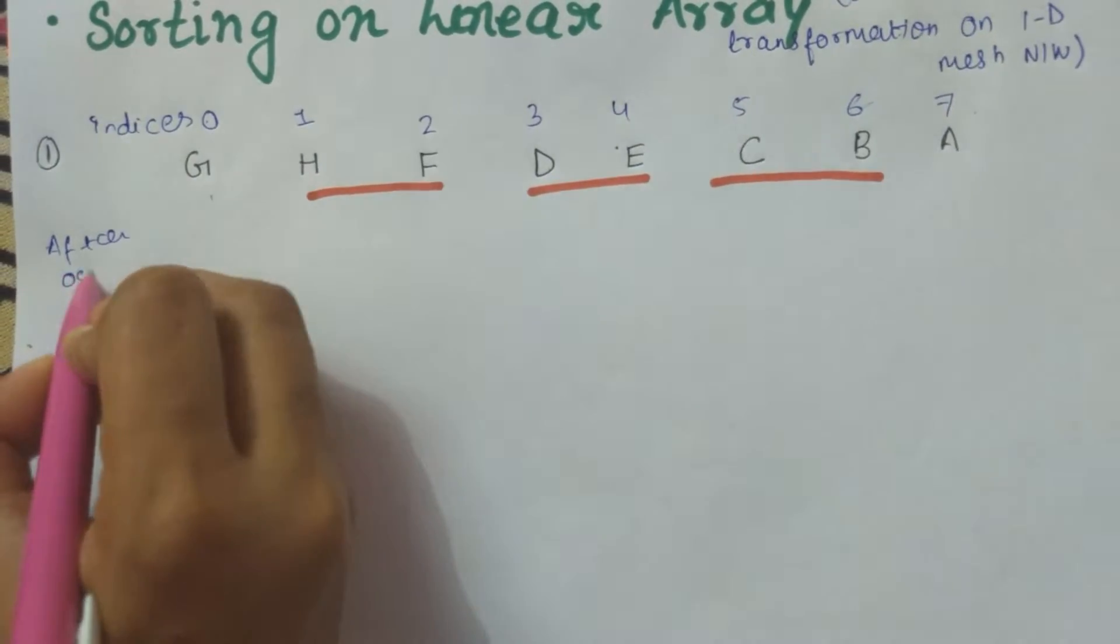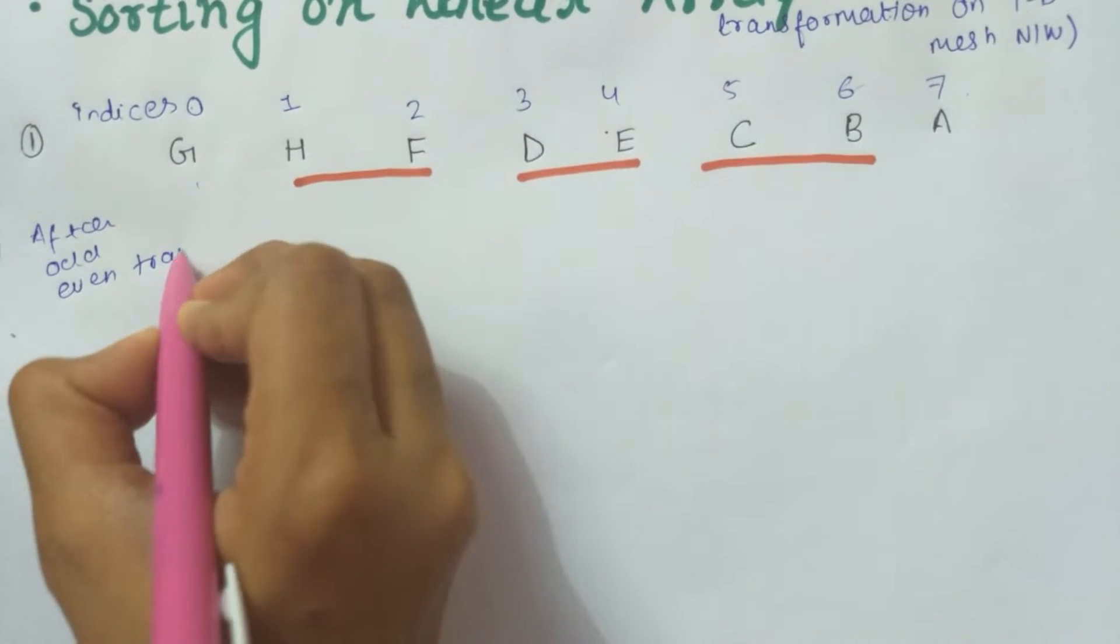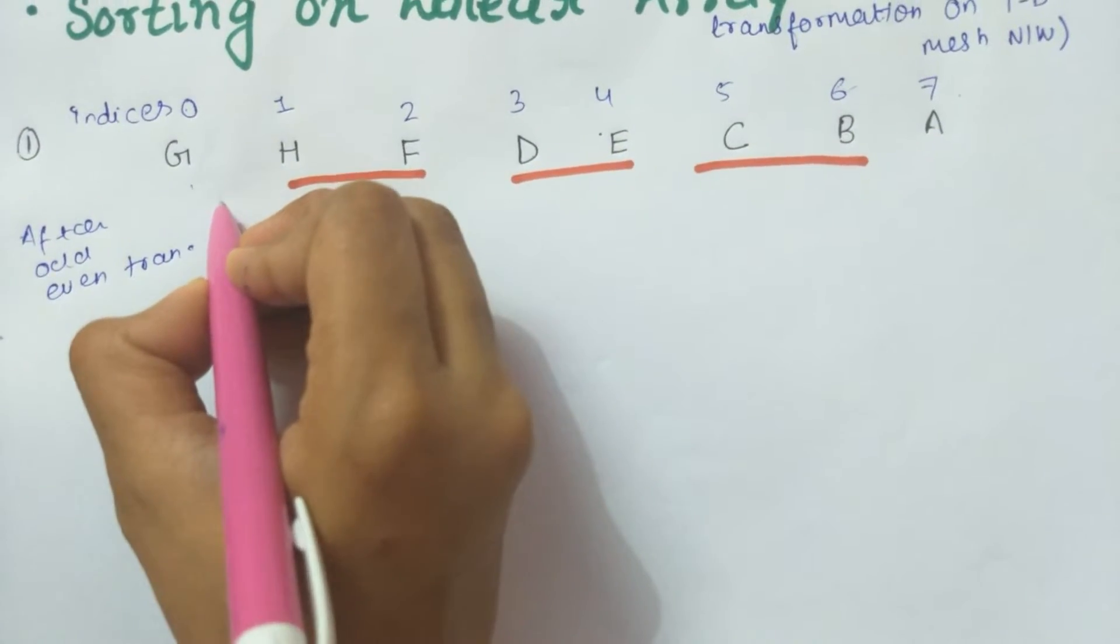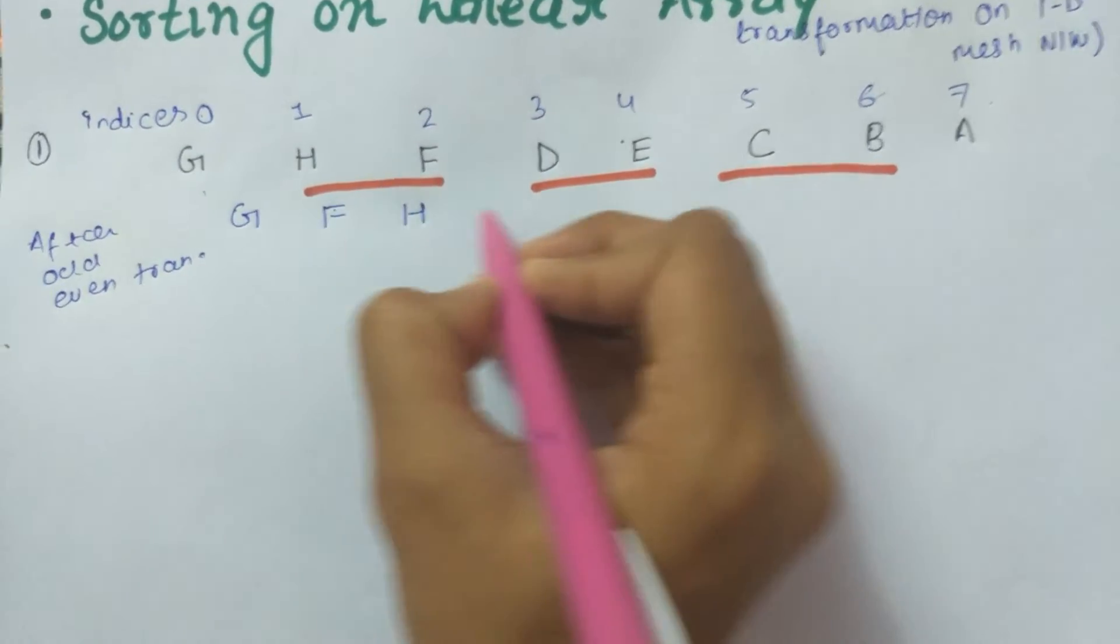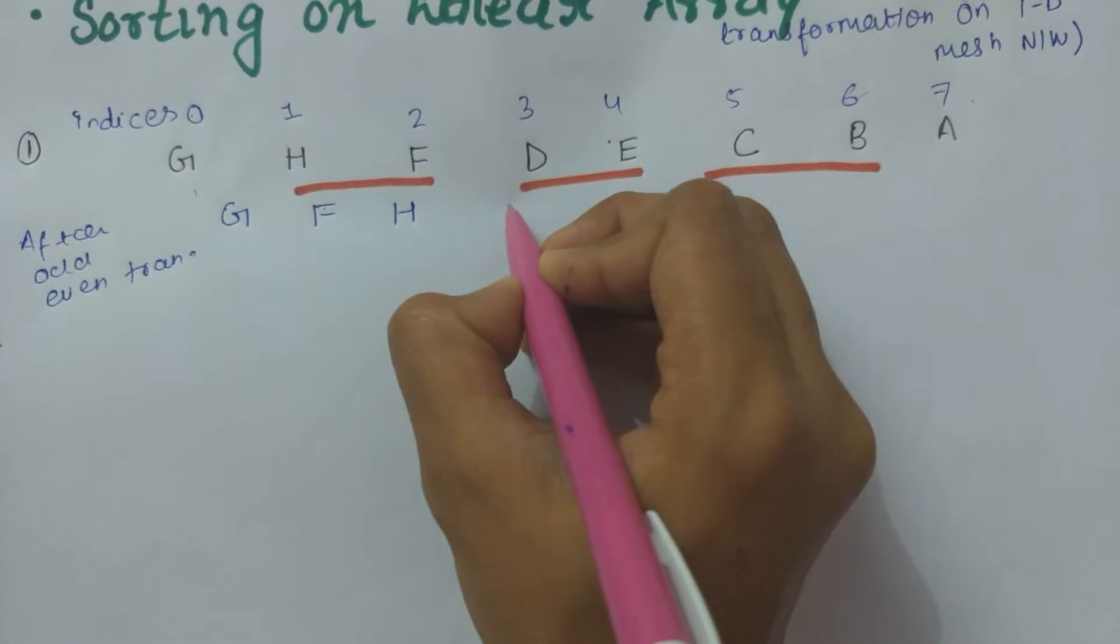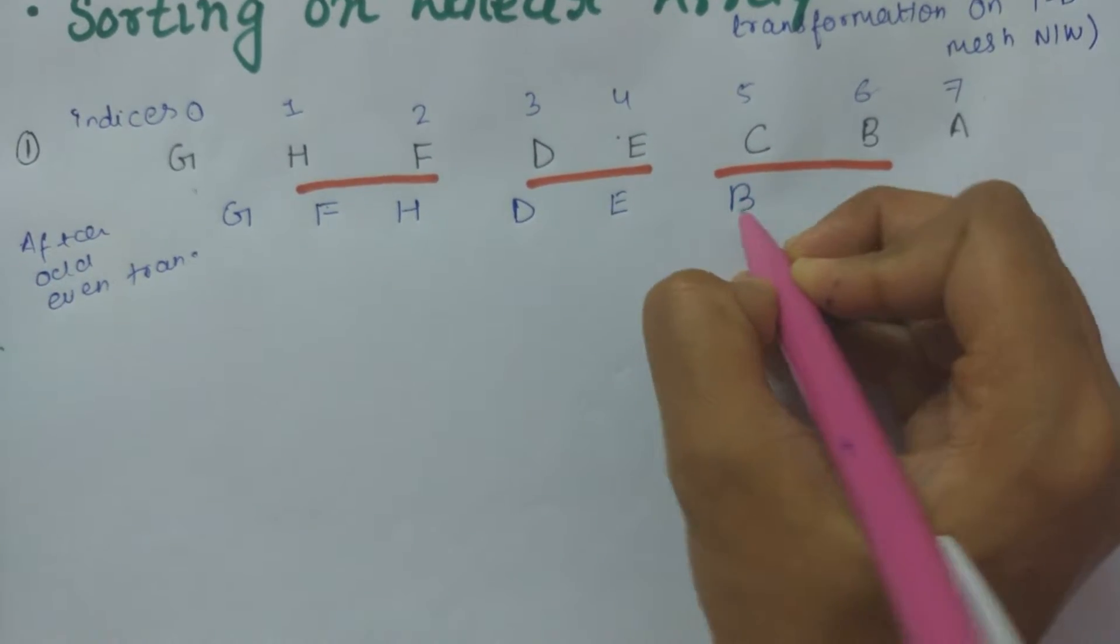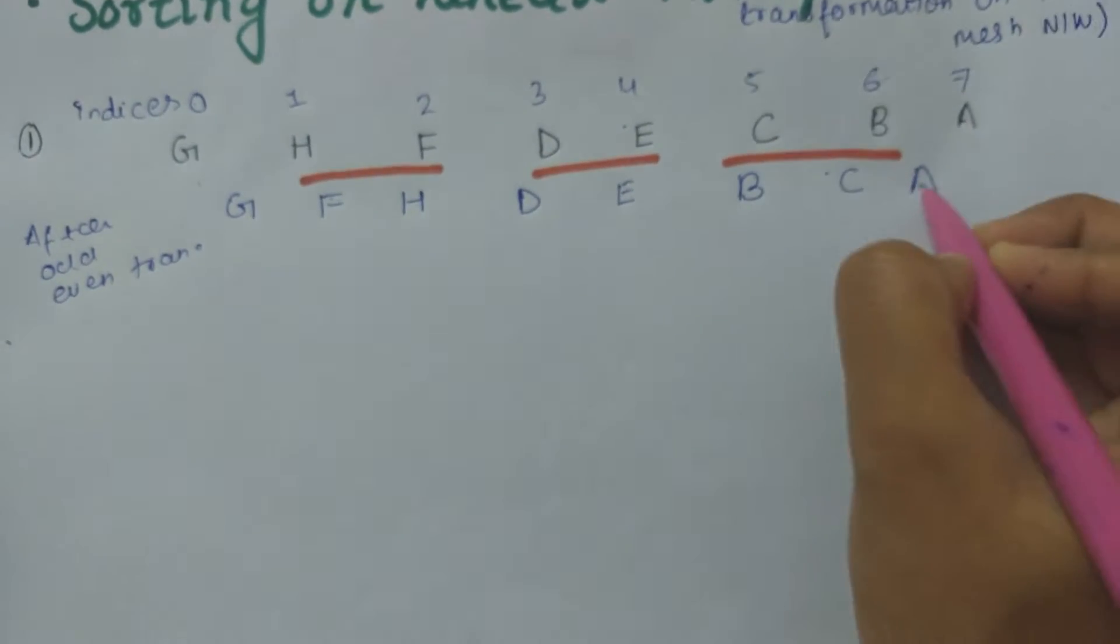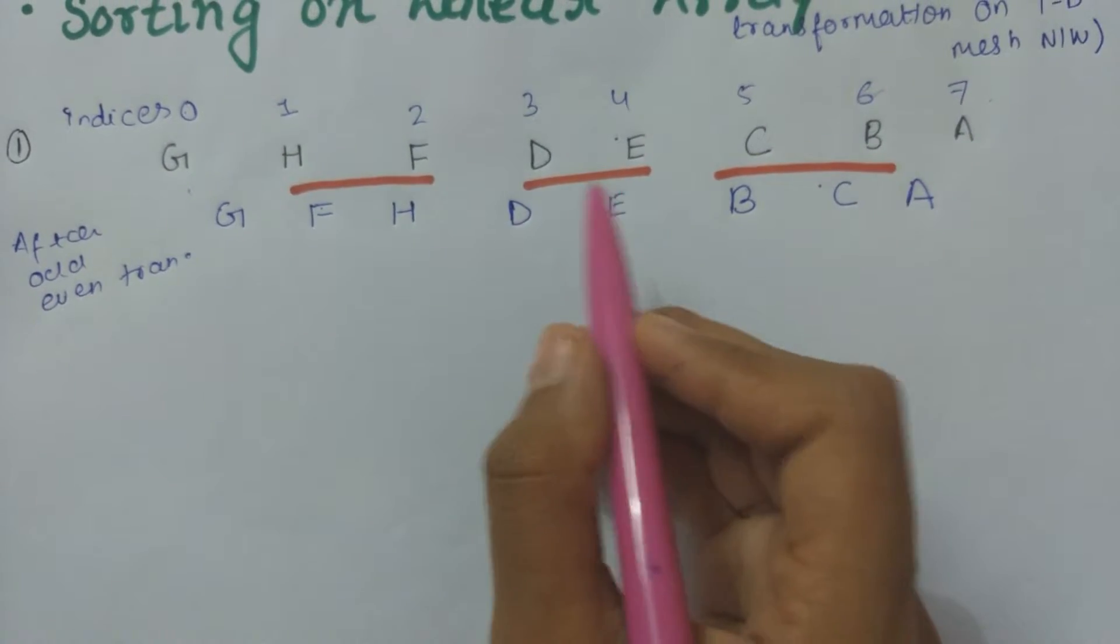We will get G, F, H, D, E, B, C, and A. You can see that we have simply swapped the two alphabets which were not in the proper order.